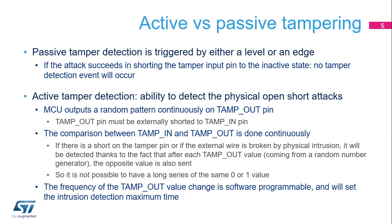Passive tamper detection just checks a static level. It is typically used to connect a sensor and to detect a change of the sensor output, either a level or edge trigger detection. So if the attack succeeds in shorting the tamper input to the inactive state, no tamper detection event will occur. Active tamper detection detects the physical open/short attack. A TAMP OUT output pin provides a pseudo-random value; after outputting this value, the TAMP OUT pin outputs its opposite value.